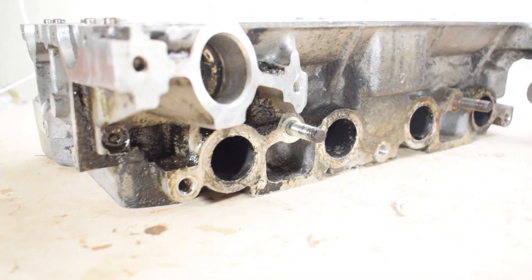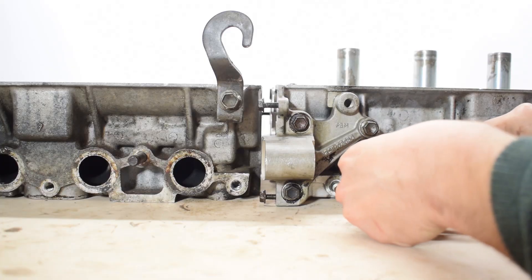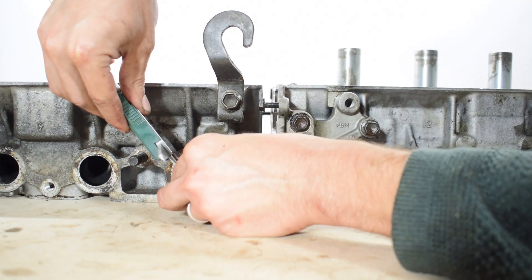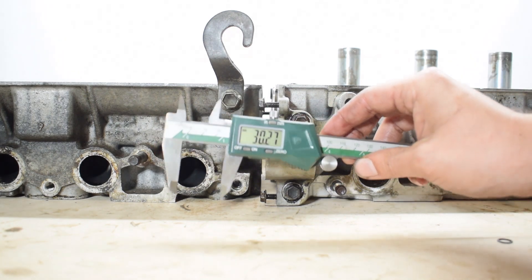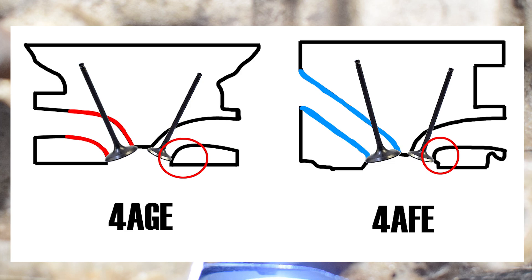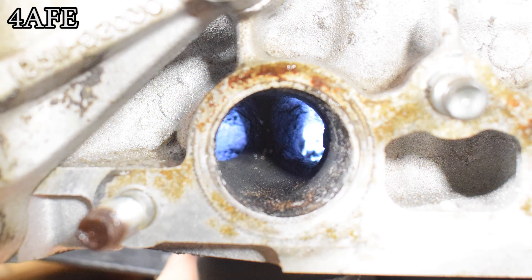Now let's take a look at the exhaust ports. Both heads feature round exhaust ports with nearly identical cross-sections. However, the performance head is at an advantage here because exhaust ports can't be angled upwards, so the wide valve angle actually results in a more straight exhaust port shape in the performance head. On top of this, the overall shape as well as the length uniformity is better in the performance head, resulting in improved and less restrictive exhaust flow, which of course positively impacts performance.